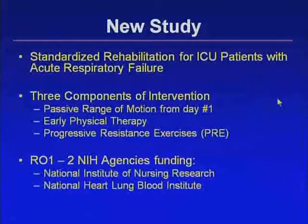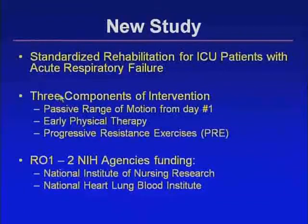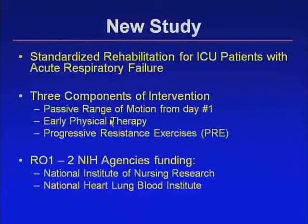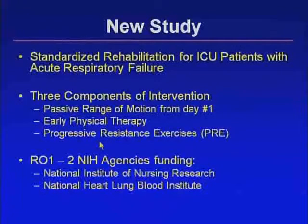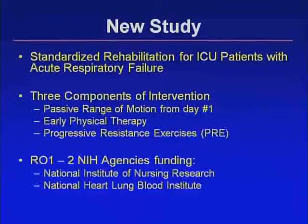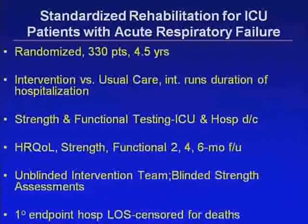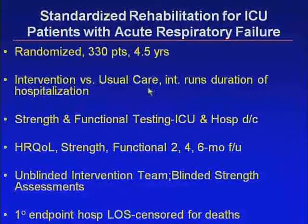One new study ongoing at Wake Forest, supported by the NIH, addresses three components: passive range of motion starting from day one for acute respiratory failure, physical therapy focusing on anti-gravity and trunk muscle improvement, standing and walking, and a third component adding passive-resistant exercises using TheraBands graded by color for difficulty. This protocol will take about four years to complete, running across the hospitalization, comparing usual care versus intervention, with strength and functional testing and an outcome component added.